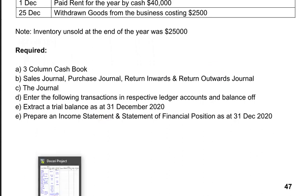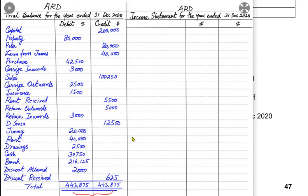Now, what is an income statement? An income statement, also known as a profit and loss account, basically tells us how much profit the business has earned or how much loss it has incurred in a particular accounting period. It can be one year, or less than a year — maybe bi-yearly, quarterly, or even monthly.